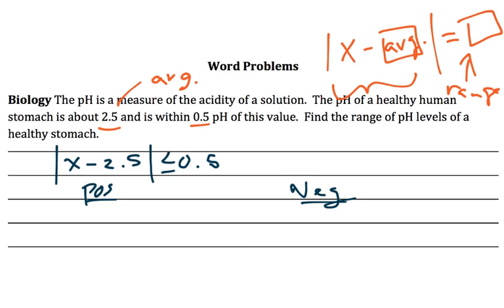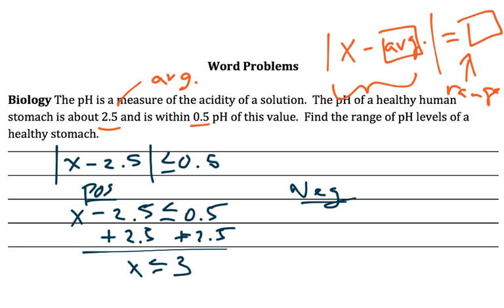We'll just go ahead and solve this. Here's the positive, here's the negative. So 3 would probably be the upper boundary of that range.